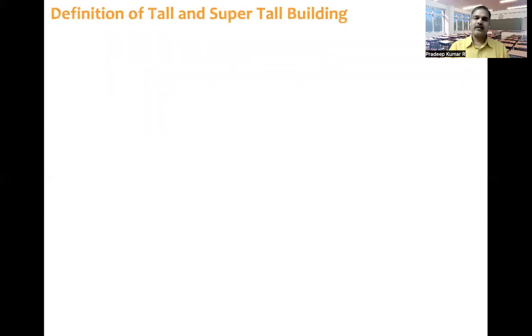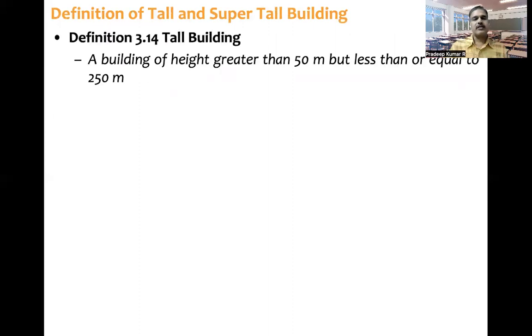Now, again, it is like a point here to understand what is the definition as per this code for tall buildings as also super tall buildings. So definition of tall building, what code says is a building of height greater than 50 meters, but less than or equal to 250 meters.